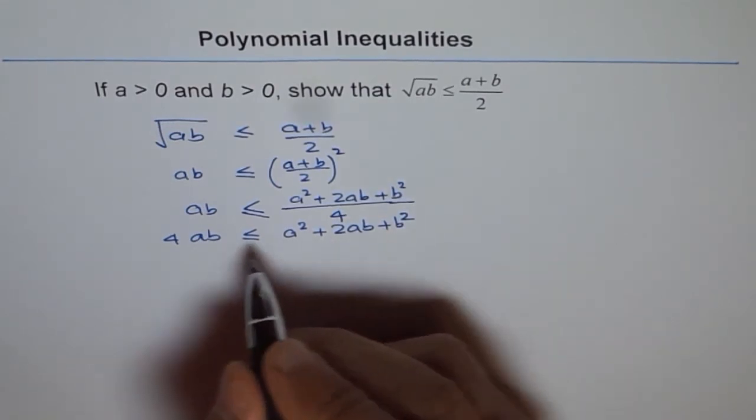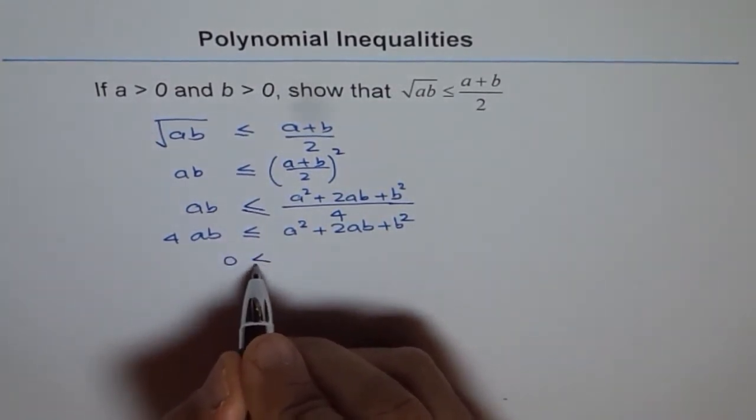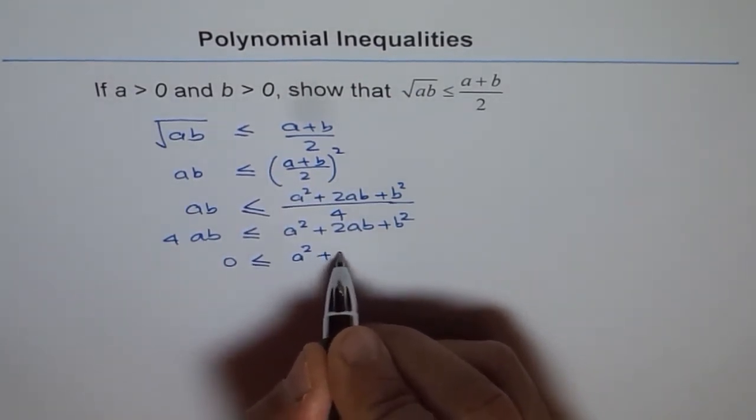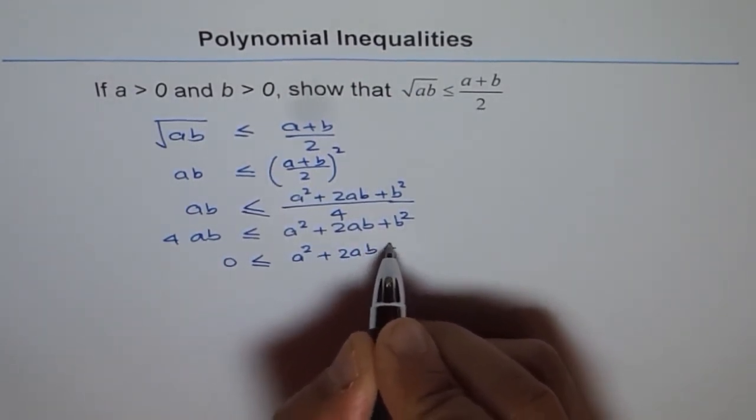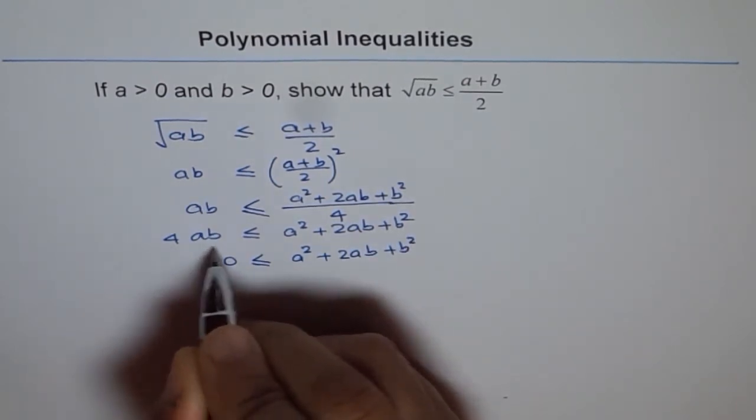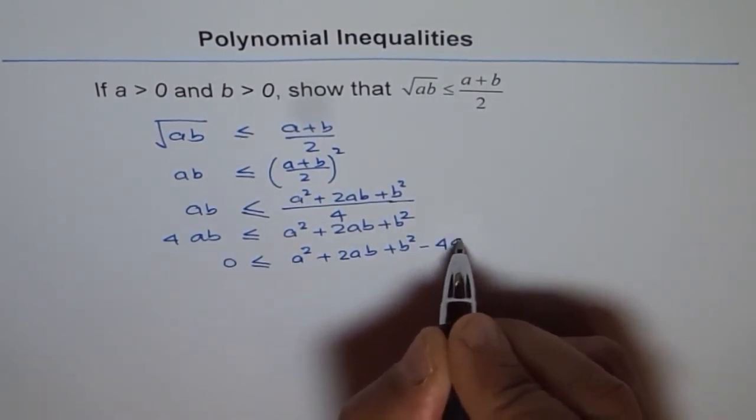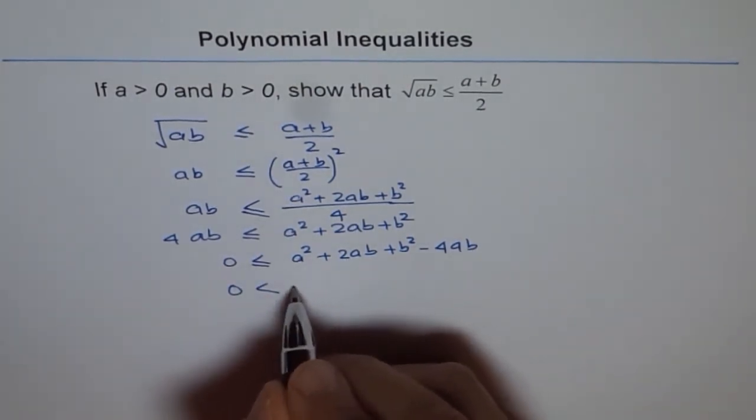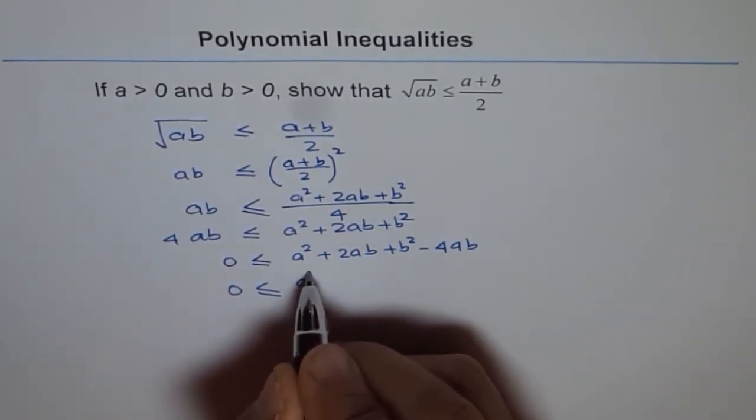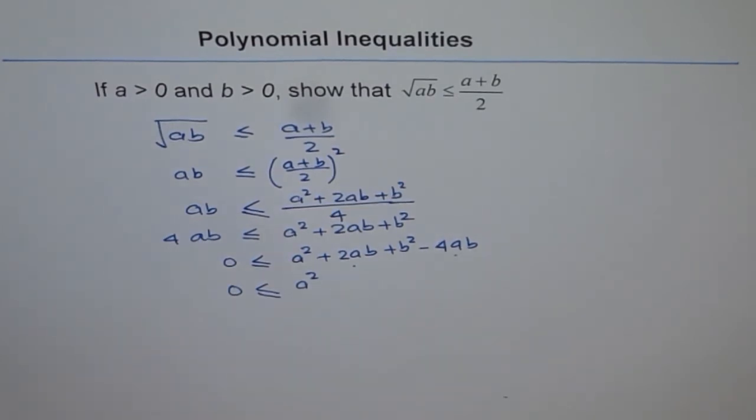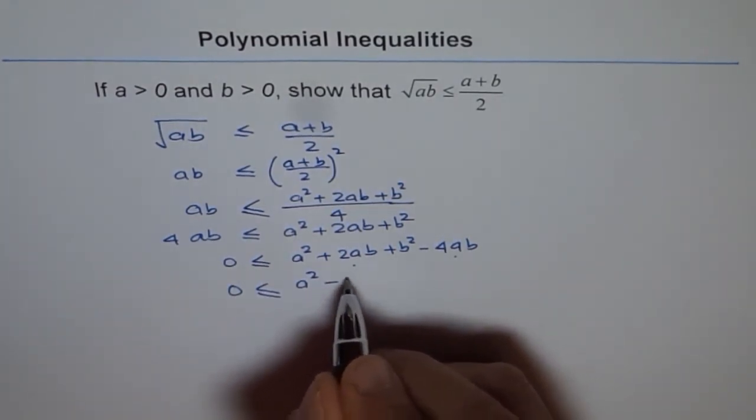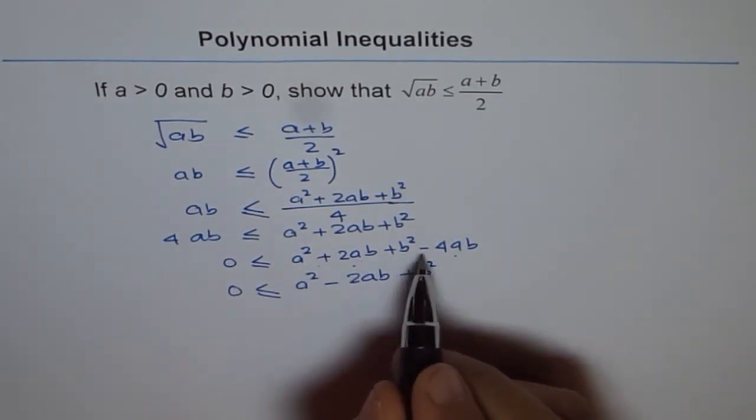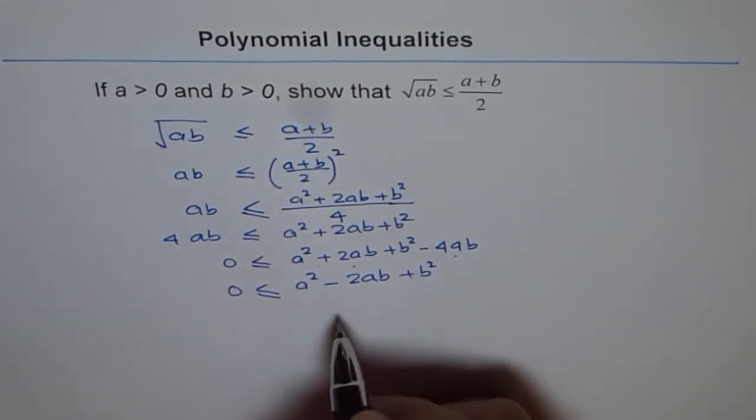Now let's bring all the terms together. So we get 0 is less than or equal to A square plus 2AB plus B square minus 4AB. Now this becomes A square. Let's combine the like terms. These are the two like terms which will result into minus 2AB plus B square. Plus 2AB minus 4AB gives us minus 2AB.